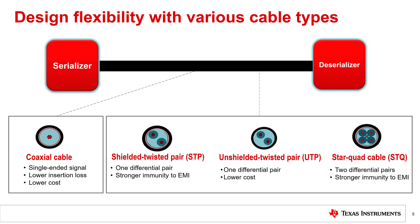vCubeLink devices offer engineers a lot of design flexibility by supporting various cable types from a wide range of suppliers. Most applications typically utilize either coaxial or twisted pair cables to carry the information between serializer and deserializer. Coaxial cables tend to have lower insertion loss characteristics when compared with twisted pair cables due to their electromagnetic construction, and they typically come at a lower cost. Twisted pair cable types, on the other hand, benefit from the fact that signals are carried differentially across them, meaning that they are typically more immune to the effects of single-ended electromagnetic interference.